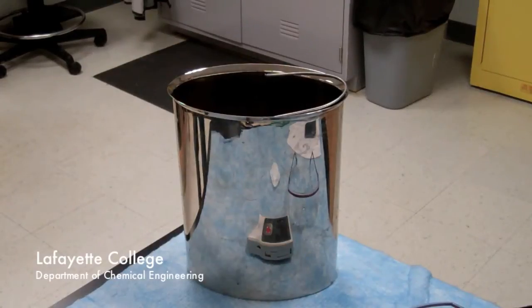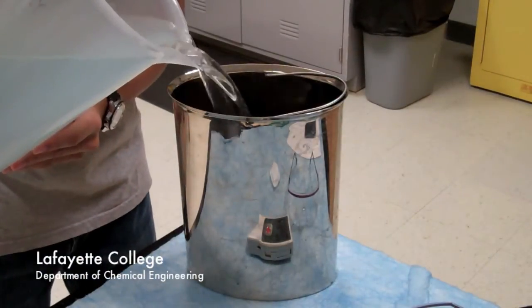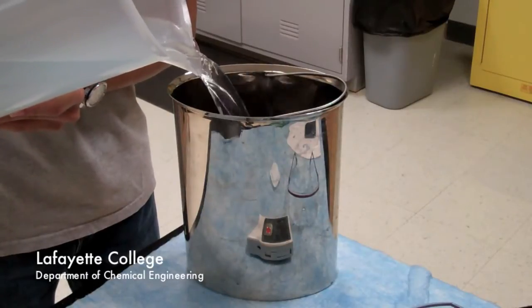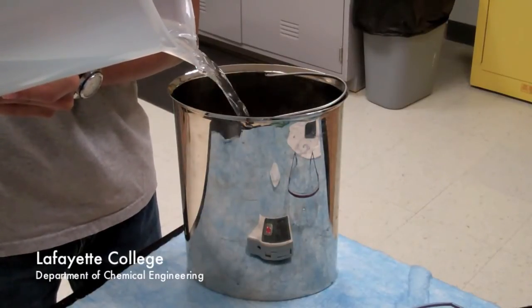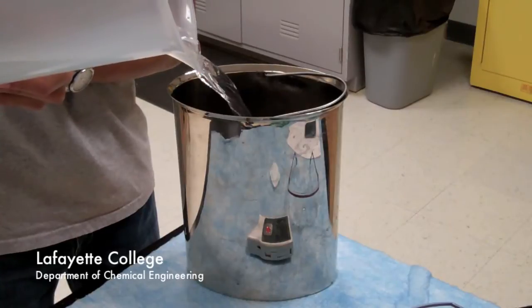The next step is to add exactly 2000.00 grams of deionized water to the dry calorimeter bucket. The best way to do this is to place the bucket on the top loading balance, tare the balance, and add the DI water slowly.